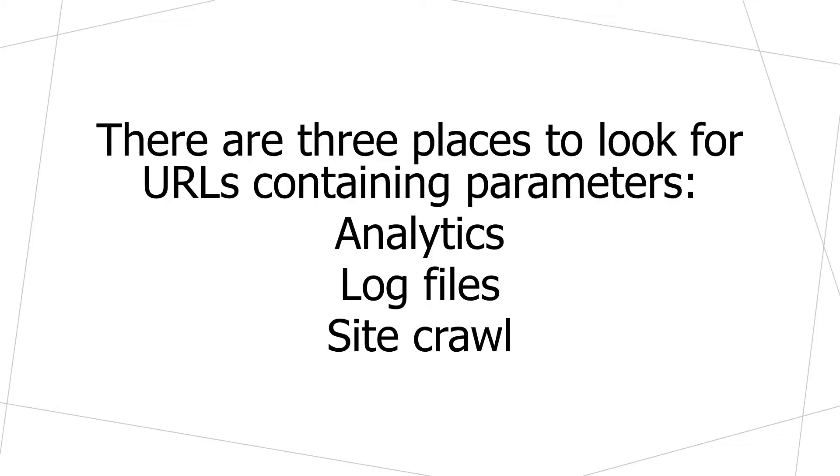While you can start there and hopefully get a few parameters listed out, you need to find parameters in other ways. There are three primary tools we can use: analytics tools, log files, and crawling through the site. The goal of each of these tools is to identify how many URLs on your website are utilizing some kind of parameter — specifically, every URL that has a question mark in it. A question mark indicates the beginning of a query string, and the query string contains one or more parameters.